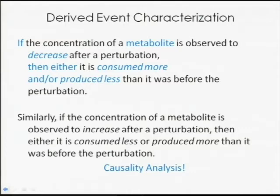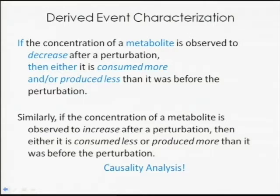The basic rule we use: if a metabolite is observed to increase and is produced by a reaction using a substrate, and that substrate has decreased in the blood, we can go backwards and say that substrate has decreased — a derived observation. Or if a metabolite has decreased, possibly it's consumed more in the next reaction. This is the causality analysis — the inverse applies for observed increases.